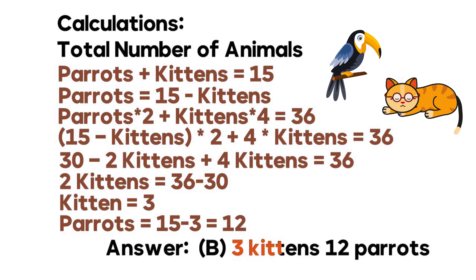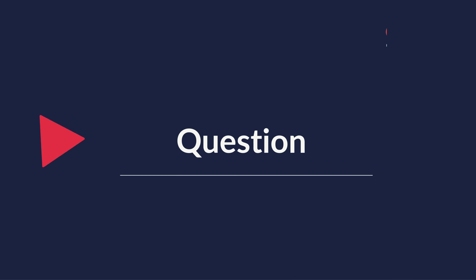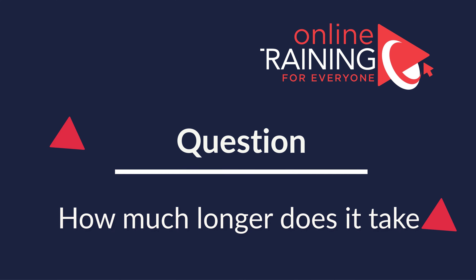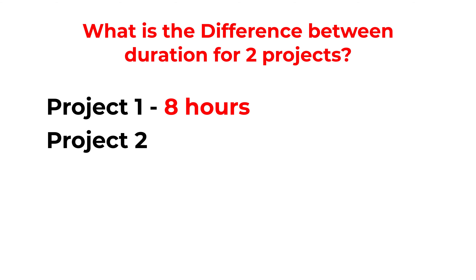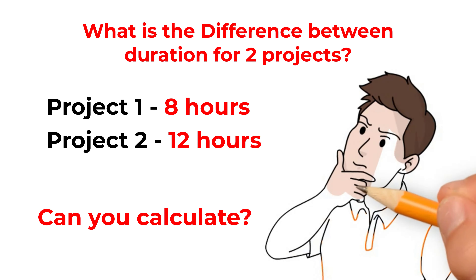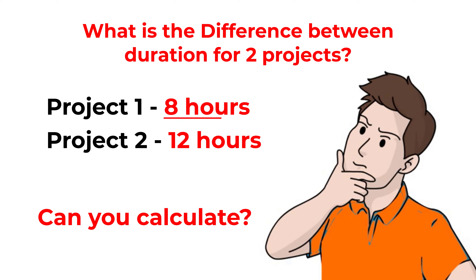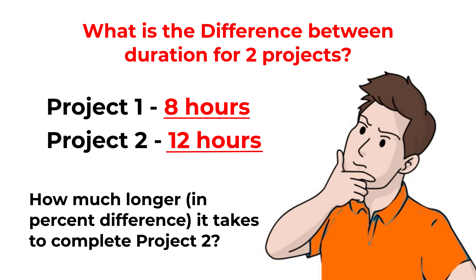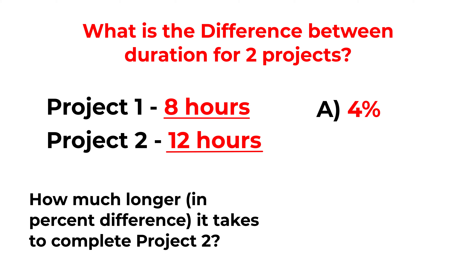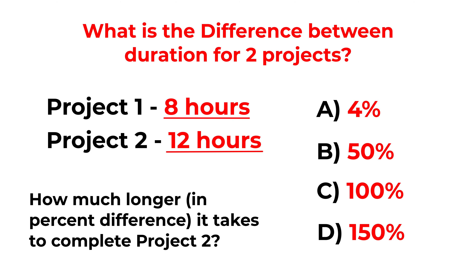The correct answer is choice B: 3 kittens and 12 parrots. Here is an interesting question which tests your understanding of percentage differences. You are presented with two projects: Project 1 takes 8 hours and Project 2 takes 12 hours. How much longer does it take to complete Project 2? Choices are: A) 4%, B) 50%, C) 100%, D) 150%. Give yourself 10 to 15 seconds to calculate the percentage difference.